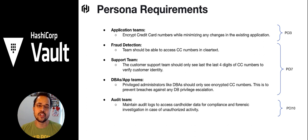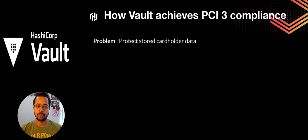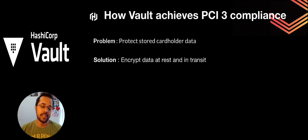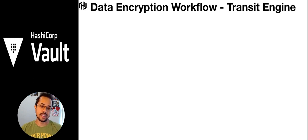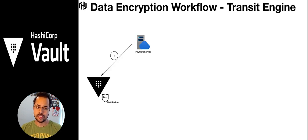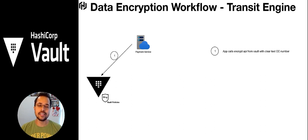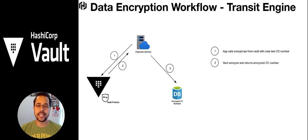Now let's go deep dive into the Vault ecosystem, starting with how Vault achieves PCI 3 compliance. The problem is cardholder data must be protected. The solution is simple: encrypt the data when it is in transit or at rest. The tool for that is the Vault transit secrets engine, which has an encryption and decryption workflow. The payment service sends a request to the encrypt API with clear text credit card information. Vault encrypts that data and returns an encrypted credit card number, which is then pushed to the database in encrypted format.